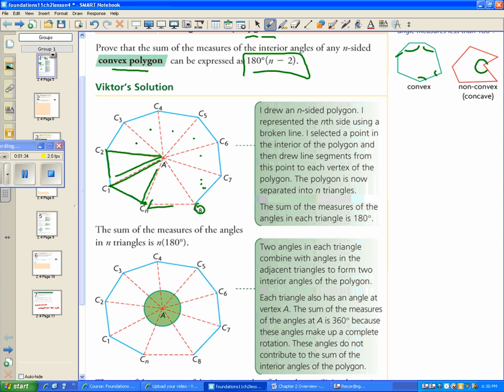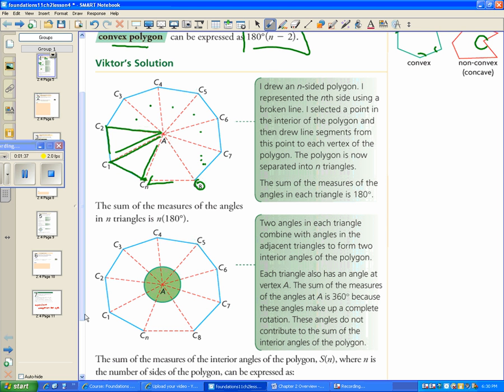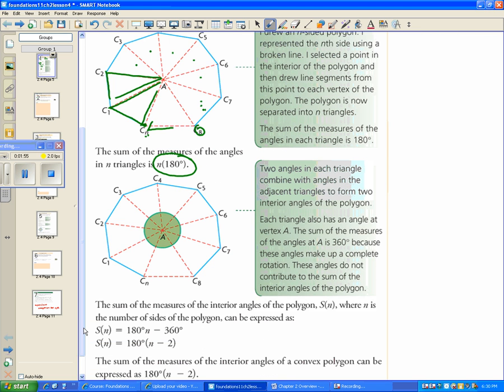If I added up each of those triangles, I learned a couple sections ago that each of those triangles has an interior angle of 180. So if I added up all of those angles, I would get n, that's my number of sides, or my number of triangles, times 180. But I only want the interior angles of my polygon. So I need to subtract all these angles in the triangle.